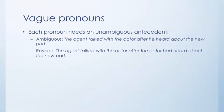Vague pronouns: each pronoun needs an unambiguous antecedent. For example, this is ambiguous: The agent talked with the actor after he heard about the new part. The problem is he — we don't know if its antecedent is the actor or the agent, so the sentence is not clear. Revised: The agent talked with an actor after the actor had heard about the new part. We have to repeat the actor because there is no other way to know who had heard about the new part.